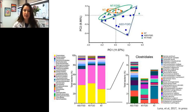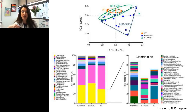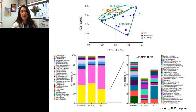Principal component analysis showed clear separation of the ASD group from two neurotypical groups. As we dug deeper into microbial community composition, we found that this separation was driven most heavily by differences in Clostridiales — echoing several prior studies in ASD.